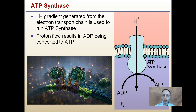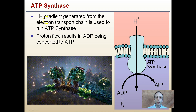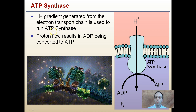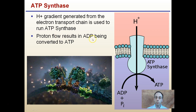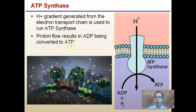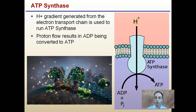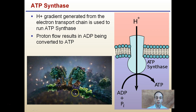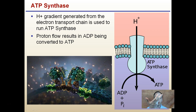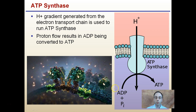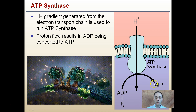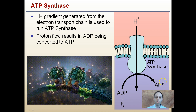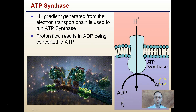ATP synthase uses the hydrogen ion gradient generated from the electron transport chain to produce ATP. The proton flow results in ADP — adenosine diphosphate — being converted to ATP. As hydrogen ions move across, ATP synthase actually rotates and turns, converting ADP to ATP by grabbing another phosphate — going from diphosphate to triphosphate — our high-energy molecule necessary for the cell to perform its functions.